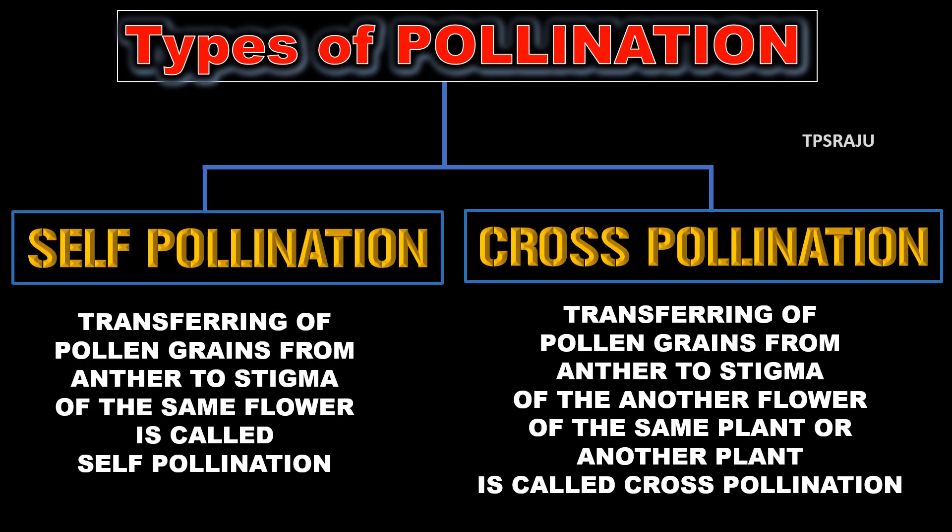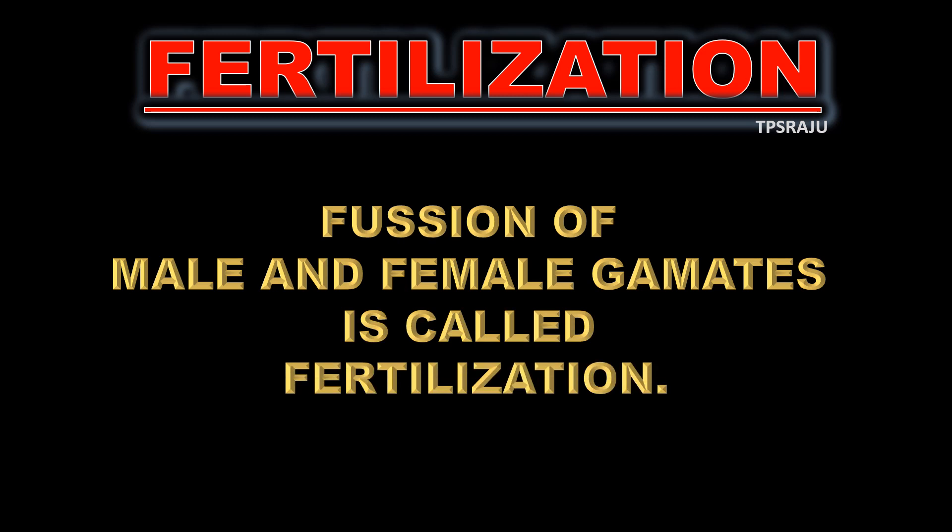Up to here we learnt about pollination. Next we are going to learn about fertilization. Fusion of male and female gametes is called fertilization. We already saw the male gametes — that is, pollen grains. Now we are going to see the female gametes.